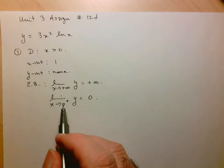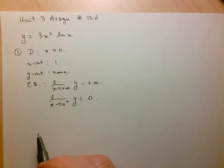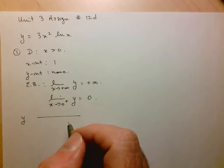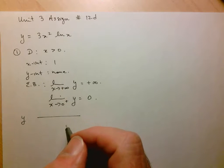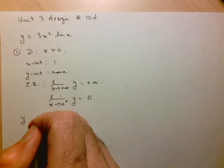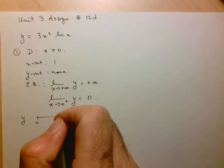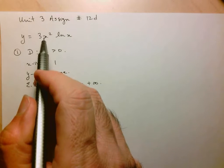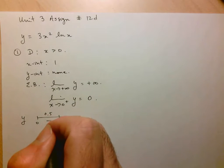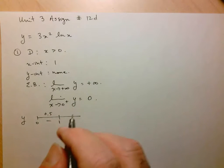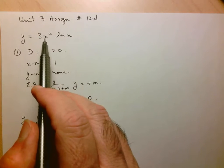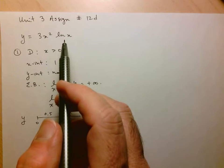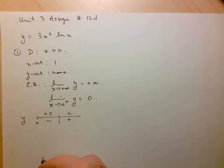The function won't be defined at 0, but it does have a limit as we approach 0. Now let's determine the sign of the function. We're only interested above 0, and our only x-intercept is at 1. If I take something like 0.5, this is positive but ln(0.5) is negative, so it's negative between 0 and 1. If I take something bigger than 1, both x-squared and ln(2) are positive, so the function is positive there.